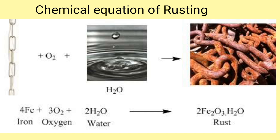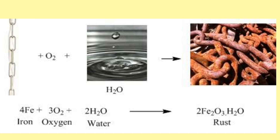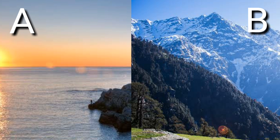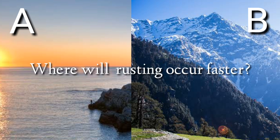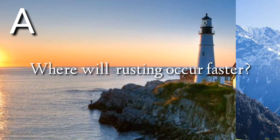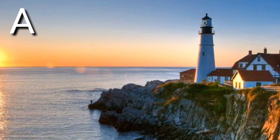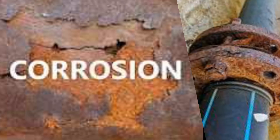The chemical equation for rusting can be presented as: Fe + oxygen + water → Fe₂O₃ (iron oxide). Here you can see two pictures — a coastal area and a hilly area. Rusting of iron will occur faster in coastal areas because the air in those places contains a lot of moisture.